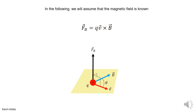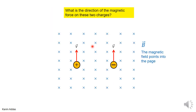Let's look at some of the differences between the electric force and the magnetic force. In the following, we're assuming that the magnetic field is given. What's the direction of the magnetic force on these two charges? In this case, the crosses here mean that the magnetic field points into the page. We have a negative charge moving in this direction with velocity V, and a positive charge moving in the same direction with velocity V. What would the direction of the magnetic force on these two charges be?